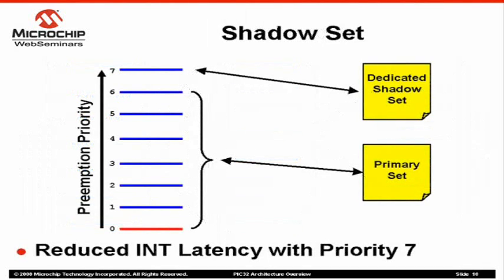In the previous slide, we learned that priority 7 vectors get the highest priority. In addition to that, priority 7 vectors also get a dedicated shadow register set. In normal operation, when the CPU is executing at priority 6 or lower, the CPU operates on a primary register set. But when a priority 7 interrupt occurs, the interrupt controller automatically switches to the shadow set and jumps to the appropriate vector. With the dedicated shadow set, the priority 7 interrupt offers faster interrupt response as compared to other priority interrupts.